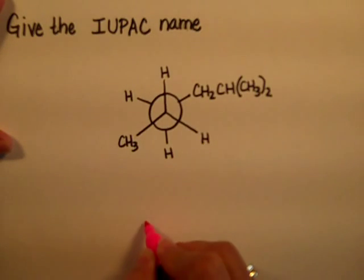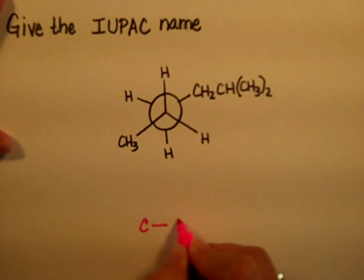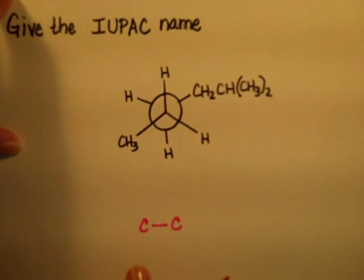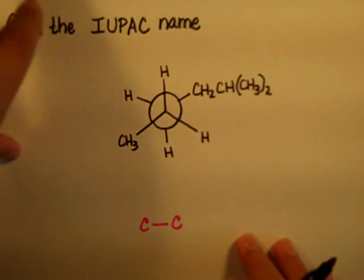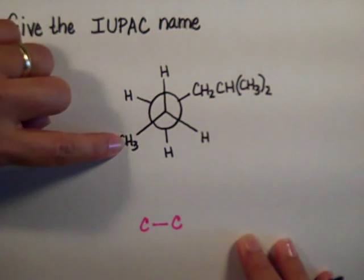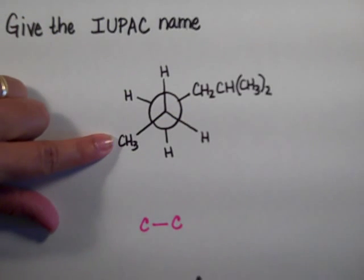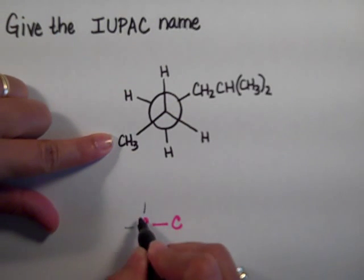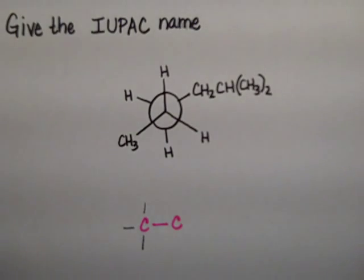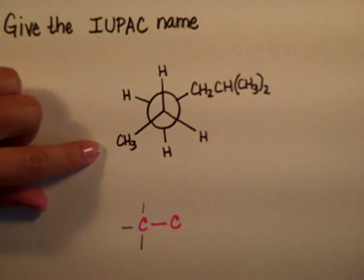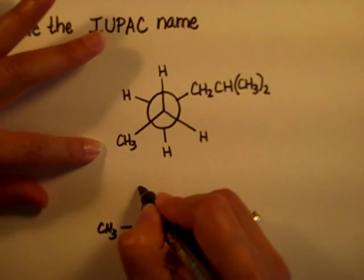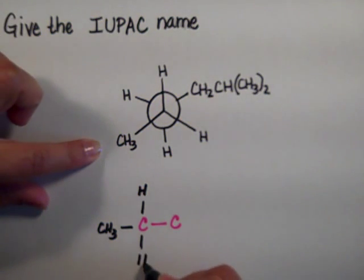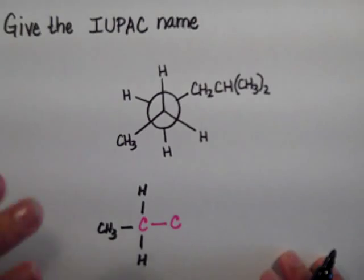I'm going to put down the two carbons that are being represented by the circle. One of them is going to be the front carbon, the other one is going to be the back carbon — it makes no difference which one is which. In the front carbon I have a methyl and two hydrogens, so I'm going to put one methyl and two hydrogens. The front carbon is already done.